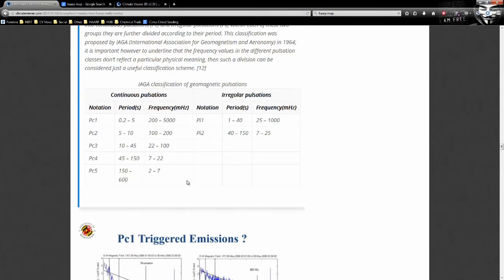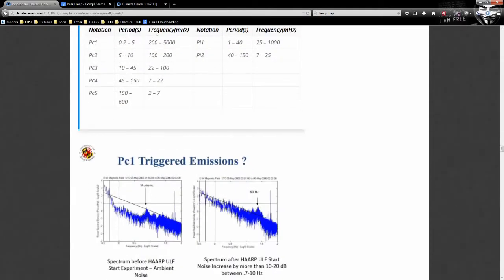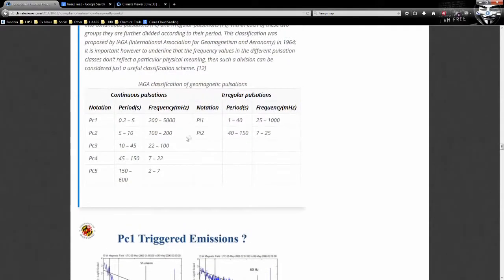They're also known as PC1. So periods 0.2 to 5, and it says in here frequency in megahertz, 200 to 5,000 megahertz.